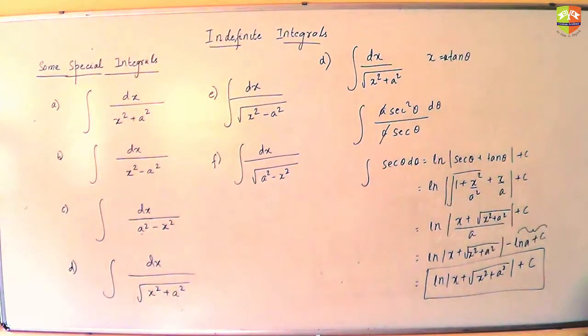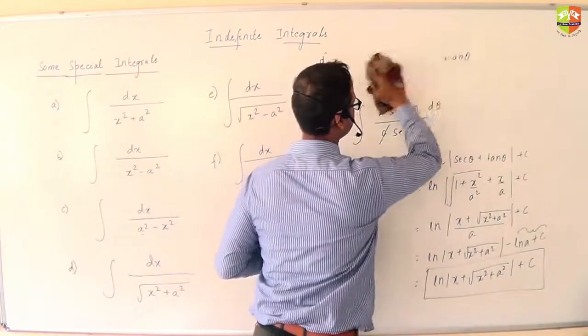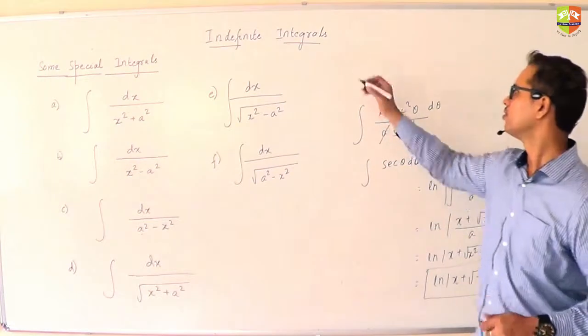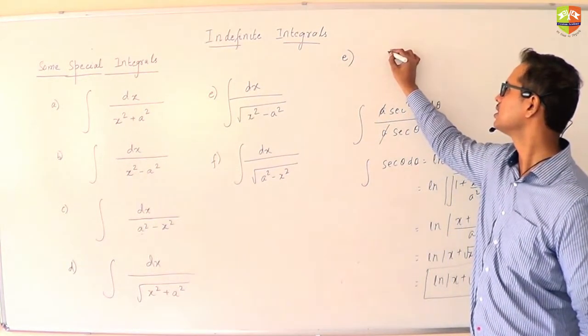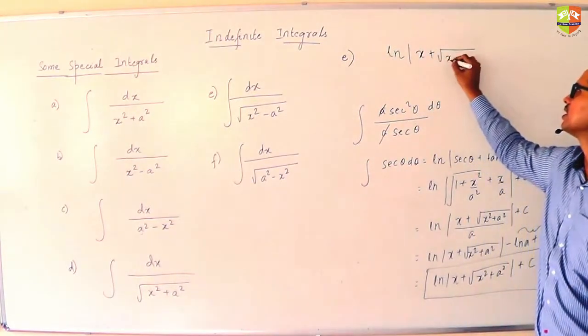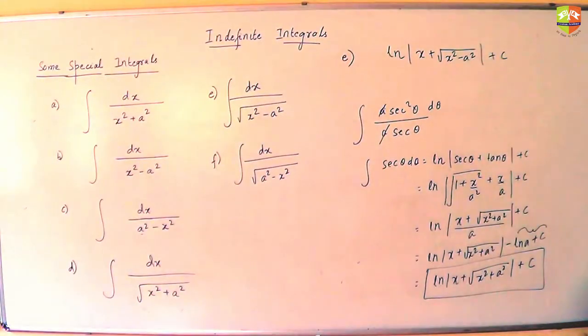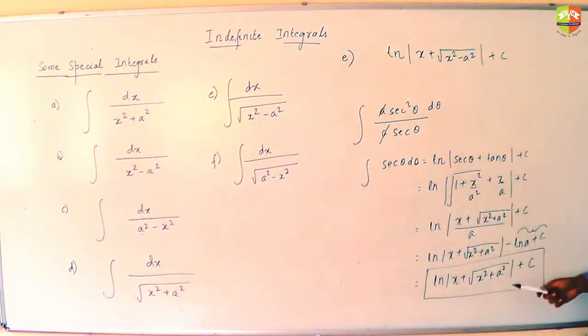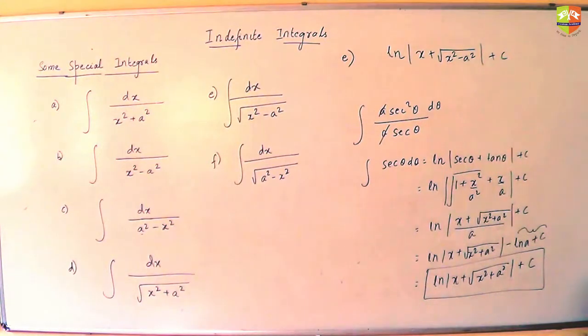Now what will happen to dx? It will become a sec theta tan theta d theta. For e, your answer should be ln mod x plus root x squared minus a squared. There is a lot of similarity between the two formulas, just that there is a minus sign in the case of this. So as in the problem, the result also changes. So let me derive e.